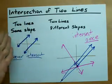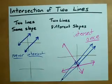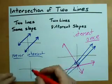Now there is one small exception to that rule. If the two lines have the same slope and the same y-intercept, then they are literally the same line.